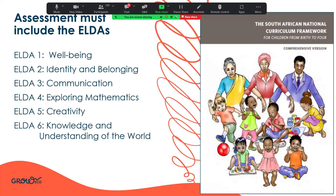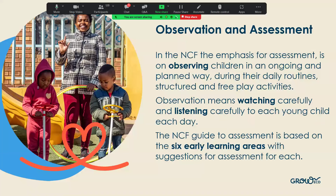The assessment must take into account all the ELDAs — the early learning development areas. Your assessment must look at the child's well-being, identity and belonging, communication, mathematics exploration, creativity, and knowledge and understanding of the world. All of these aspects should be taken into account when planning an assessment. In the assessment tool we'll be sharing with you later, we've covered all of those ELDAs to make sure it's a comprehensive tool.